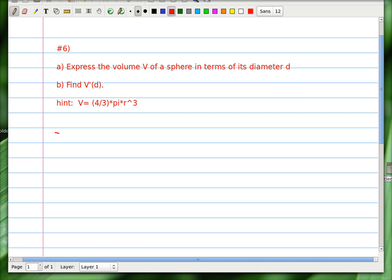So for A, ok. Now the hint that we get is that volume is equal to 4 thirds times pi times r cubed, where r is the radius of the sphere, of course. r equals radius.